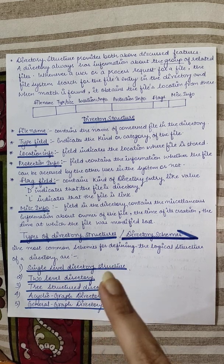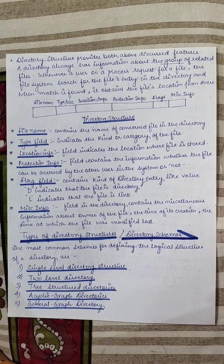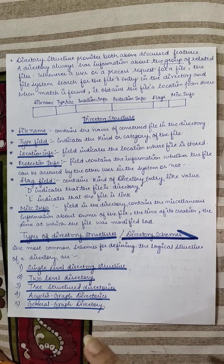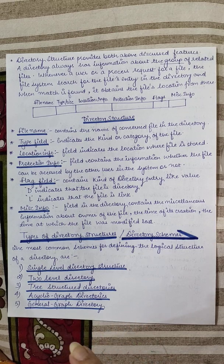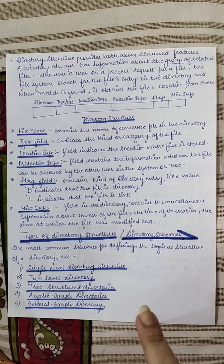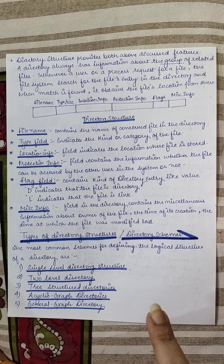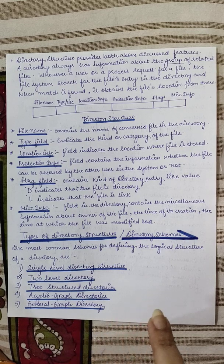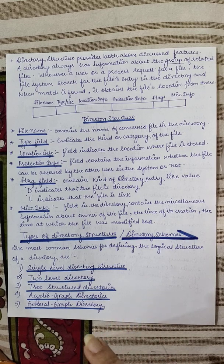The directory structures we will be discussing are: single-level directory structure, two-level directory structure, three-level or hierarchical directory structure, acyclic graph directory, and finally general graph directory.